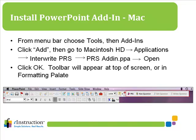Click on Add, then go to Macintosh HD, Applications, Enter Right, PRS, PRS Add-in, and then finally Open. Click OK. The PRS PowerPoint add-in will appear either with the other toolbars or along the left-hand side of the screen.